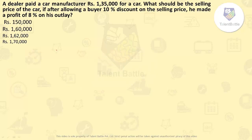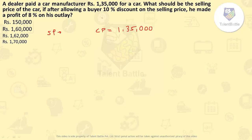Let's check this particular question. A dealer paid a car manufacturer Rs 1,35,000 for a car. What should be the selling price of the car if, after allowing a buyer a 10% discount on the selling price, he made a profit of 8% on his outlay? So the cost price of that car is Rs 1,35,000. After providing a 10% discount, he still makes a profit of 8%.